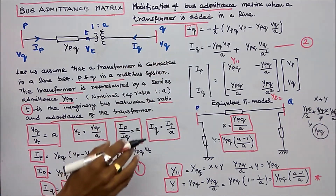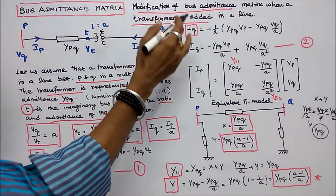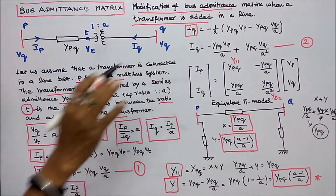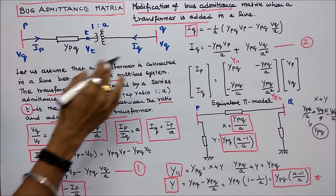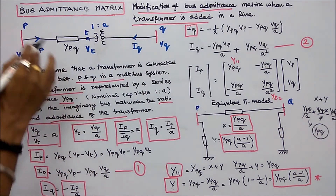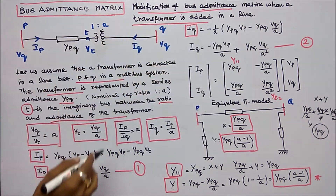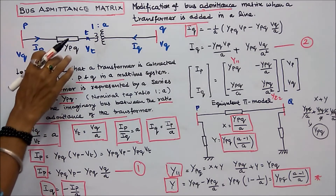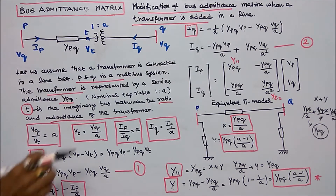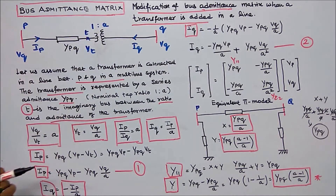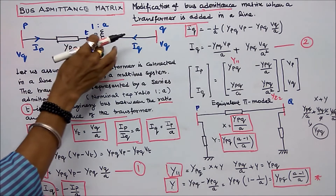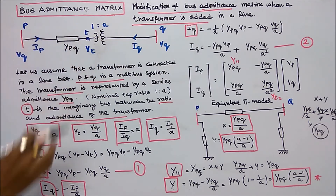This class we discuss the modification of the bus admittance matrix when a transformer is added in a line. Let us assume that a transformer is connected in a line between buses P and Q in a multibus system. The transformer is represented by a series admittance YPQ, with a nominal tap ratio of 1 to A. T is the imaginary bus between the tap ratio and admittance YPQ of the transformer.